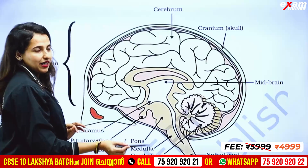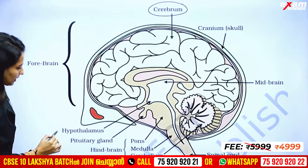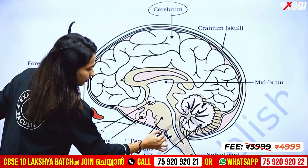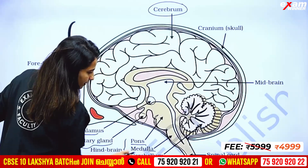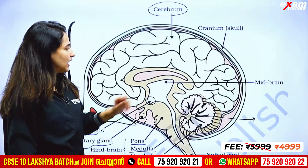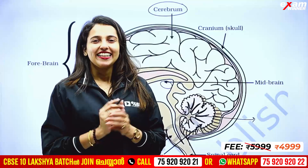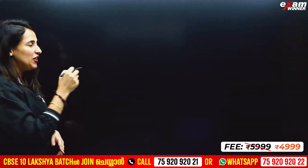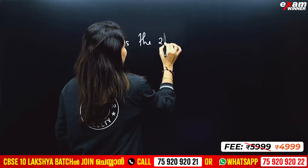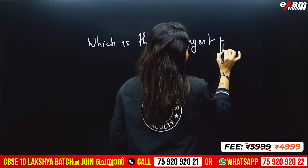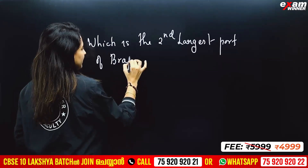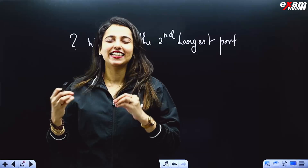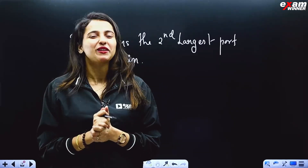In the brain diagram, we can label the Cerebrum, Hypothalamus, Pituitary gland, Endocrine glands, Pons, Medulla, Cerebellum, and Midbrain. The cerebellum is the second largest part of the brain. If you have any questions, please comment. Thank you so much. See you in the next video. Bye!